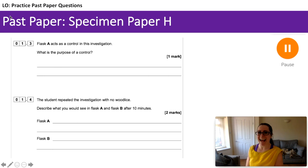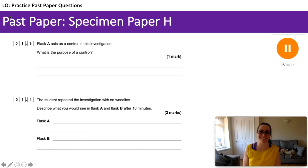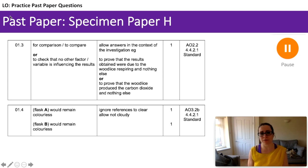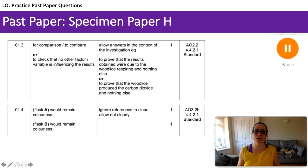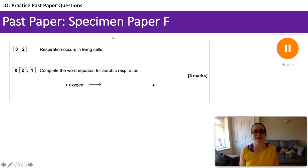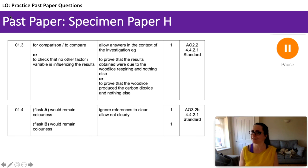Question 1.4: the student repeated the investigation with no woodlice — what would flask A and flask B look like? Flask A would remain colourless — no carbon dioxide produced. Flask B would also remain colourless: if there are no organisms, there's no respiration; if there's no respiration, there's no carbon dioxide; if there's no carbon dioxide, there is no reaction and the flask remains colourless. Note: ignore references to 'clear' — colourless is the answer.